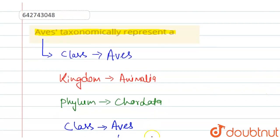So this is how we can taxonomically identify the Aves under Phylum Quadrata and Kingdom Animalia. We can taxonomically represent Aves as belonging to Kingdom Animalia and Phylum Quadrata in which this class is present, that is Aves.